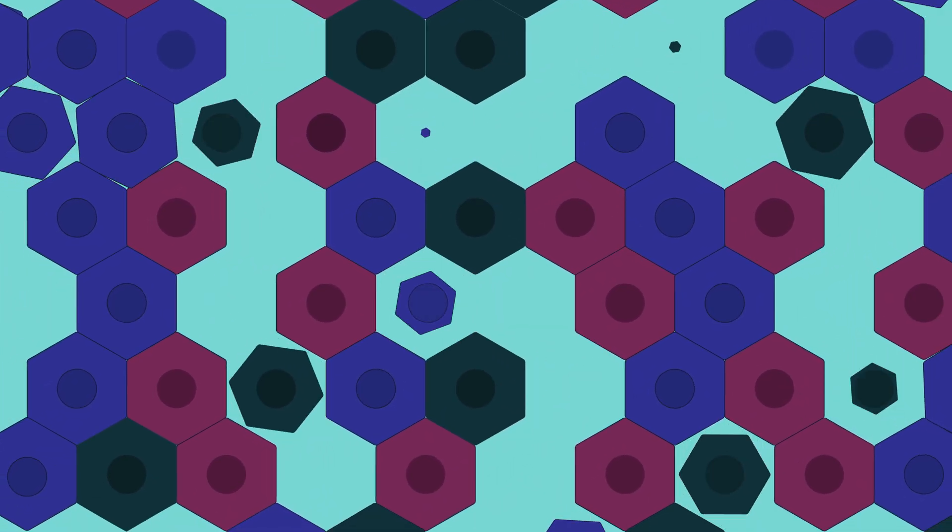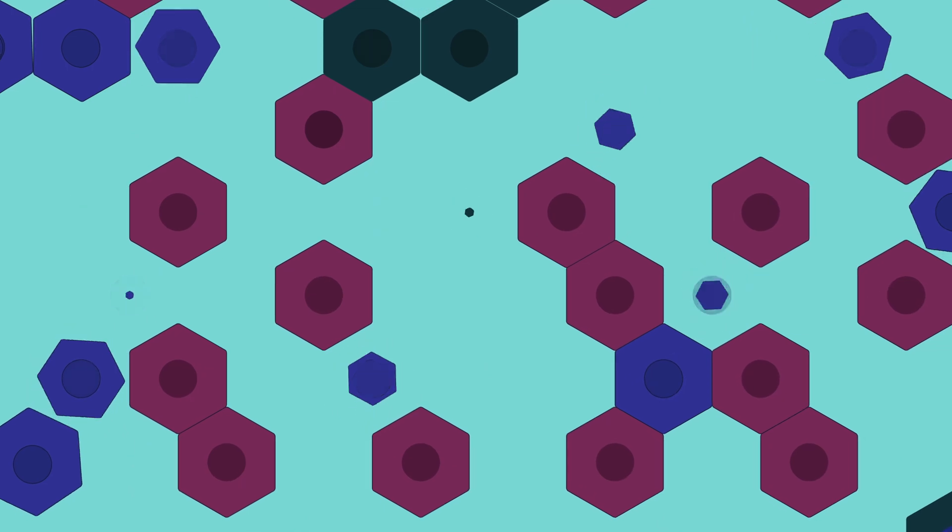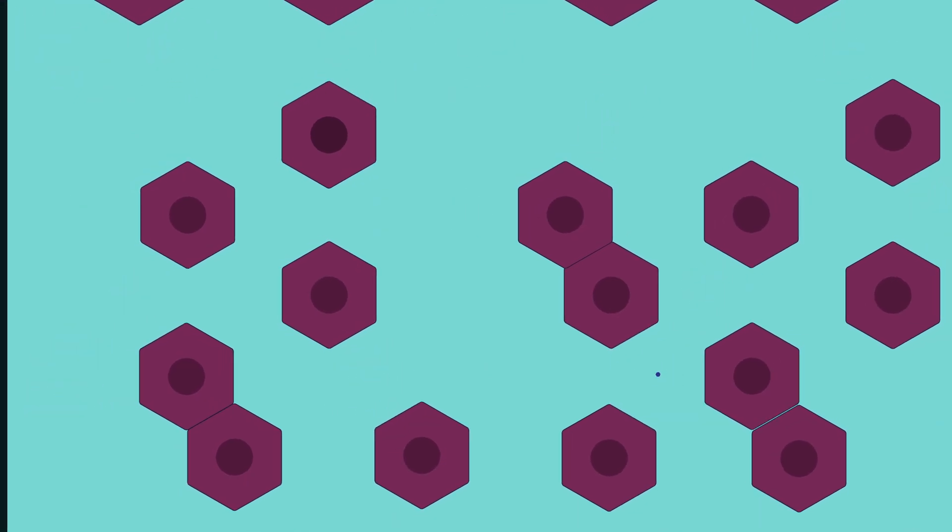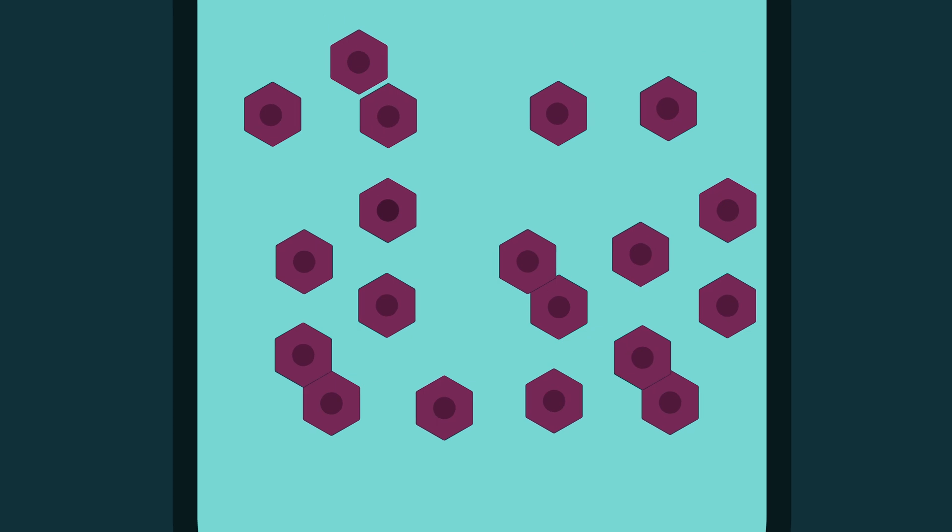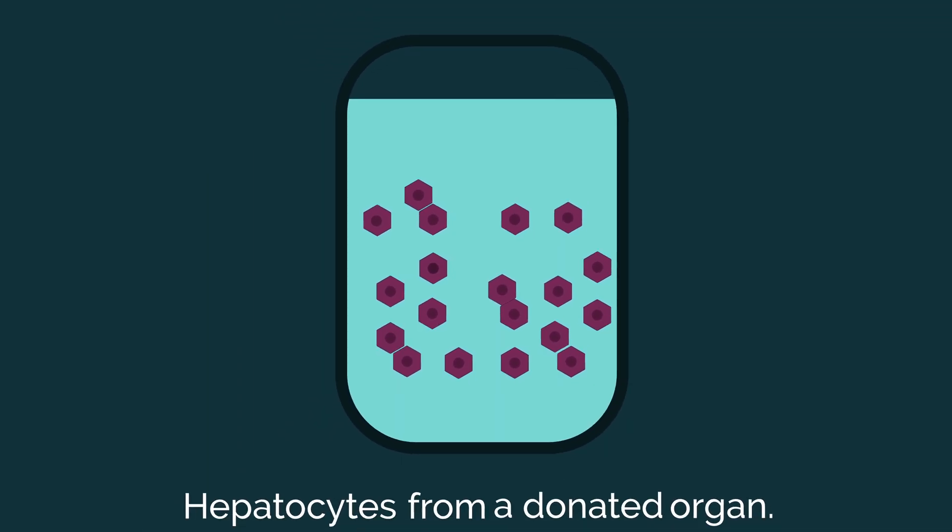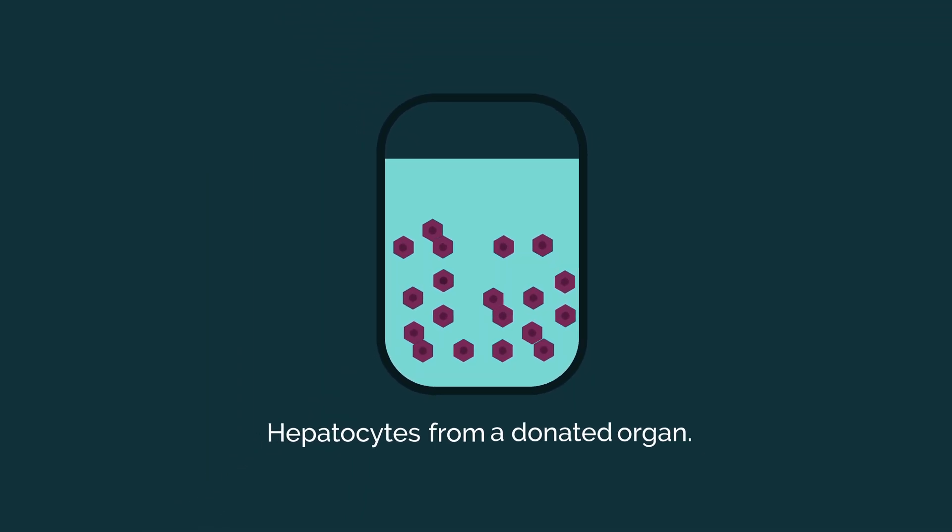Livers are made up of many cell types, but the most common are called hepatocytes. Lygenesis' cell therapy is derived from isolating the hepatocytes from a donor liver to ready them for engraftment. In only a few hours, hepatocytes from the donated organ are ready to be used as seeds to grow new, functioning organs.